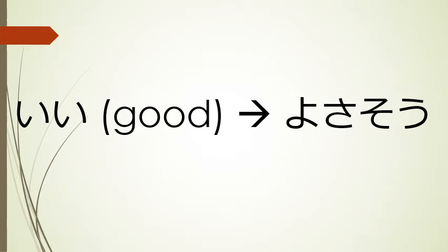Now, there is an exception to this rule, and that is 'ii.' As usual, 'ii' has to follow its own set of rules, so it becomes 'yosasou.' And of course, this applies to any adjectives that have 'ii' as a component of them. So 'kakko ii' would become 'kakko yosasou.'